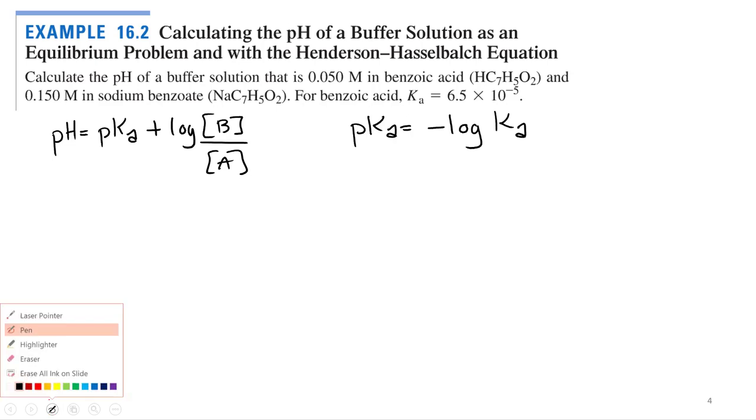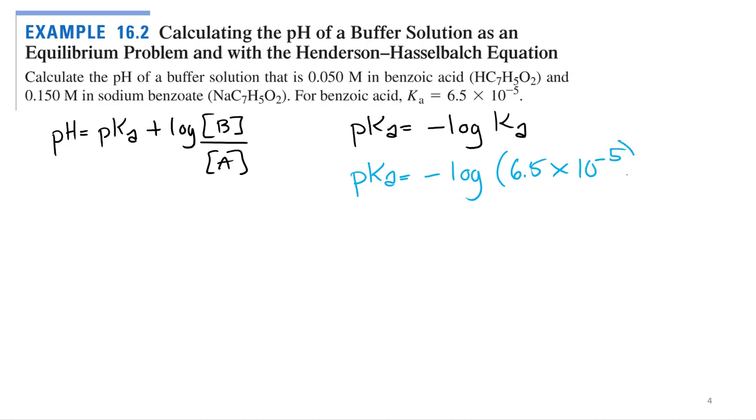What do you think the pKb is? Negative log Kb. So we need that pKa, so let's just calculate that right away. The pKa is going to equal negative log of the Ka, which is 6.5 times 10 to the negative 5th, which equals 4.2.